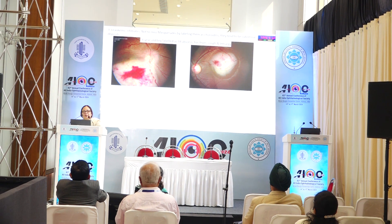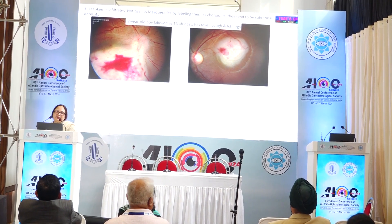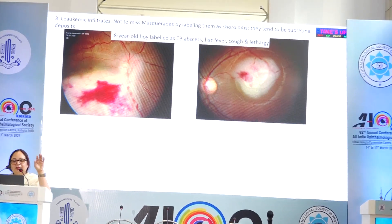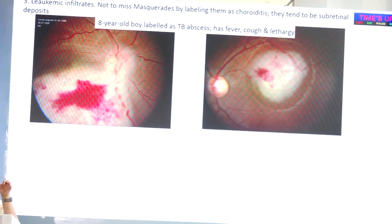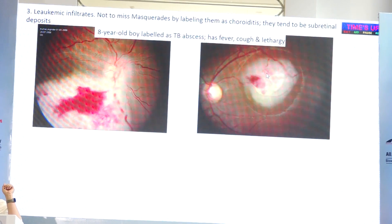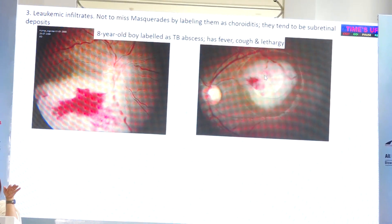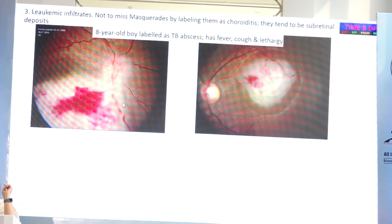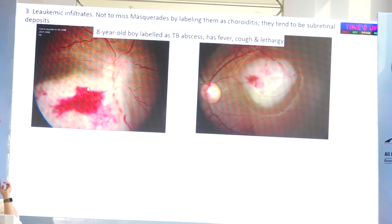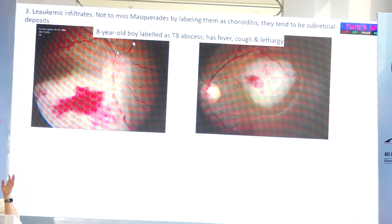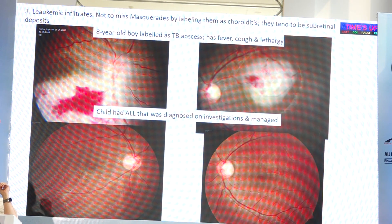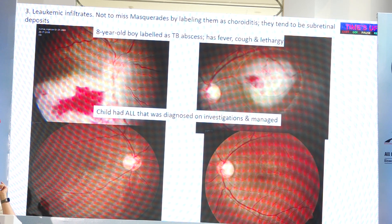Leukemia is another condition where you may have deposits in the subretinal space. They tend to be more white — not leopard skin-like. They are whitish, with hemorrhages and are typically in the subretinal space. For example, this child had leukemia which was not diagnosed — had fever and lethargy — and was diagnosed with tuberculosis based on eye features. But this is not tuberculoma; tuberculoma is yellow and in the choroid. These are deposits of leukemia in the subretinal space. You treat the leukemia and they disappear; you do not normally need to give intravitreal therapy for leukemia deposits.